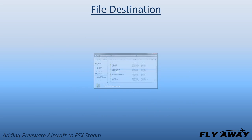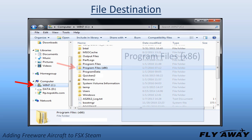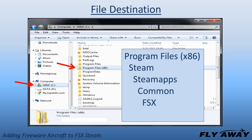Open your Windows Explorer File Manager program. Double-click on the C drive, then double-click on the following folders in this order: Program Files, STEAM, STEAM Apps, Common, FSX, and SIM Objects.